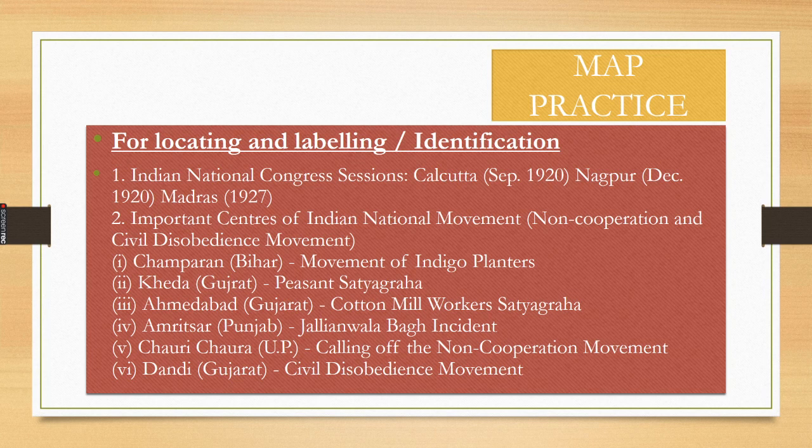This is precisely why the unity within the movement often broke down. The high points of Congress activity and nationalist unity were followed by phases of disunity. What was emerging was a nation with many voices, all wanting freedom from colonial rule.